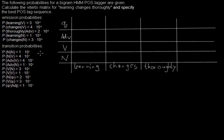We also have some transition probabilities, and it may be a little bit confusing that we use conditional probabilities. This one would mean the probability for a noun given a verb. But if you compare to the sequence, you would encounter the verb first. So this is the probability that for the amount of time you had a verb which was followed by a noun — they are the other way around than they occurred in the sequence.